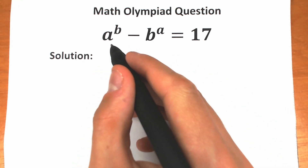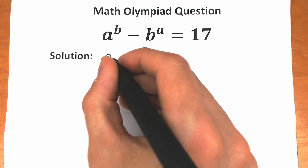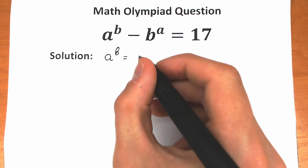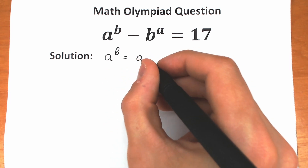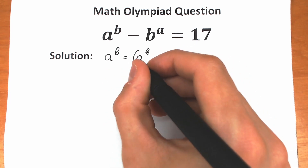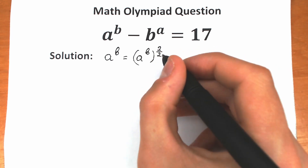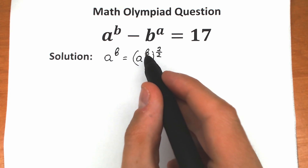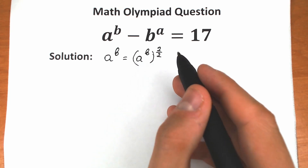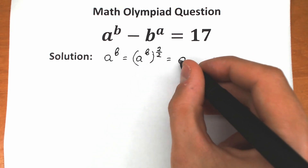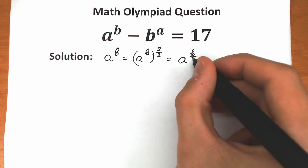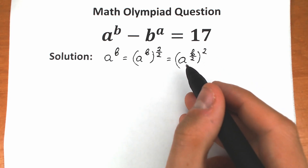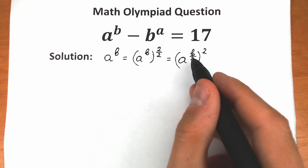First, let's look at a to the power b. We can rewrite it as a to the power b raised to the power 2 over 2 — this changes nothing but helps us a lot. We can then write this as a to the power b over 2, squared. If we multiply b over 2 times 2 we get back just b, so it's absolutely the same expression.